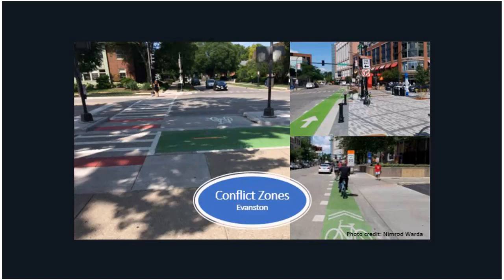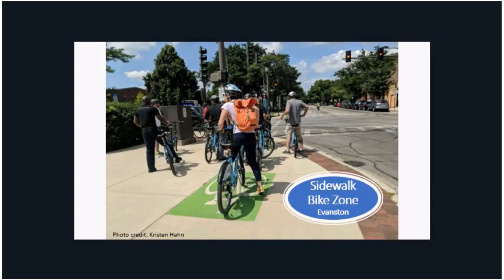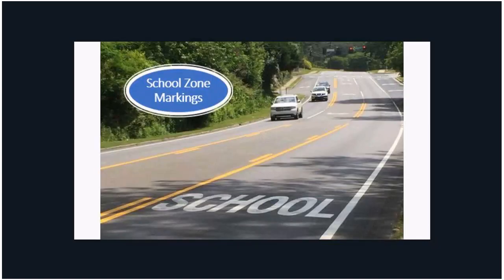When thinking about conflict zones, Evanston has done a great job looking at how pedestrians and drivers interact with bike lanes, using a lot of green paint to make sure the bike lane is visible. In many suburban communities, biking on the sidewalk is allowable — in Evanston, biking is allowed in non-commercial areas, so they've added green paint on the sidewalk area near a high school to direct bicyclists. And finally, near schools there are markings to alert drivers that bicyclists or pedestrians may be going to school.